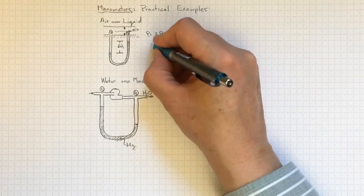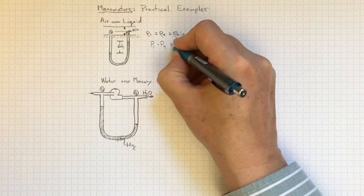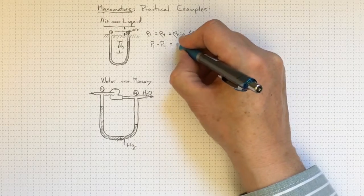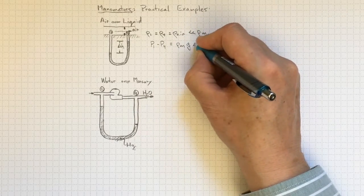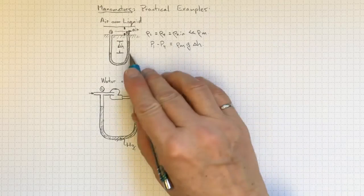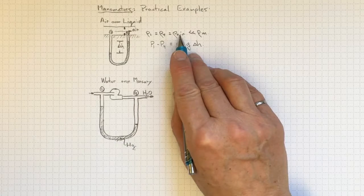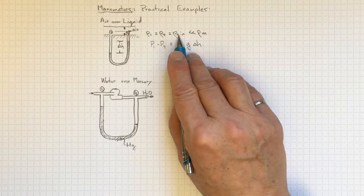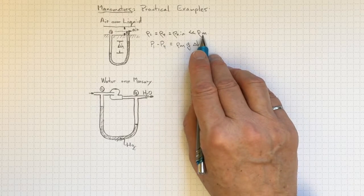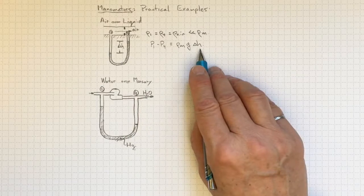And so the pressure at location 1 minus the pressure at location 4 will be equal to rho of the manometer fluid times G times delta H. So this is a really simple application, and it's really simple because we've been able to neglect the density of the air because it's probably about 1,000 times less than the density of the manometer fluid. So we can still get a very accurate measurement of pressure this way.